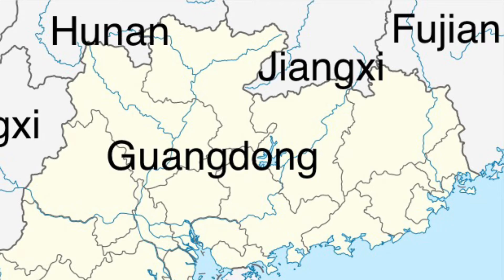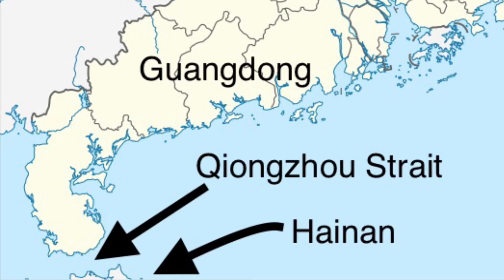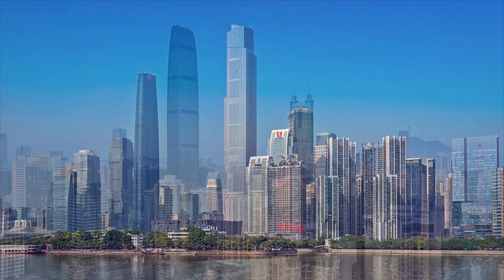Guangdong is in southern China and is the most populous province. It borders Guangxi to the west, Hunan and Jiangxi to the north, and Fujian to the northeast. To its south is the South China Sea, and at its southernmost point is the Qiongzhou Strait, across which is Hainan. Also, there are two borders on the south coast of Guangdong with China's two special administrative regions: Hong Kong and Macau. These are domestic borders, but because of the regions' autonomy in matters of immigration, crossing them involves showing a travel document such as a passport — Guangdong is the only province to have borders with special administrative regions. Its capital and largest city is Guangzhou, and another famous city is Shenzhen, whose exponential growth began only after the opening up and reform policies started in 1978.